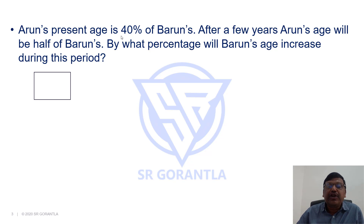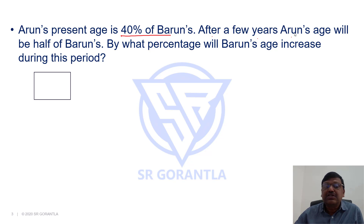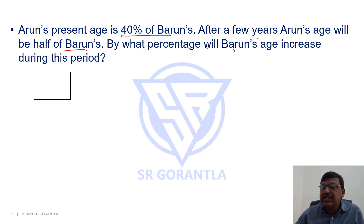Arun's present age is 40% of Barun's. After a few years, Arun's age will be half of Barun's. By what percentage will Barun's age increase during this period?